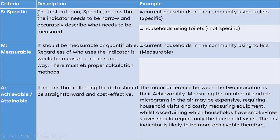Specific means the indicator needs to be narrow and accurately describe what needs to be measured. For example, 'percent of current households in the community using toilets' is specific. But 'persons/households using toilets' is not specific — it doesn't say where, which type of household, or whether current or previous. So it should be specific.